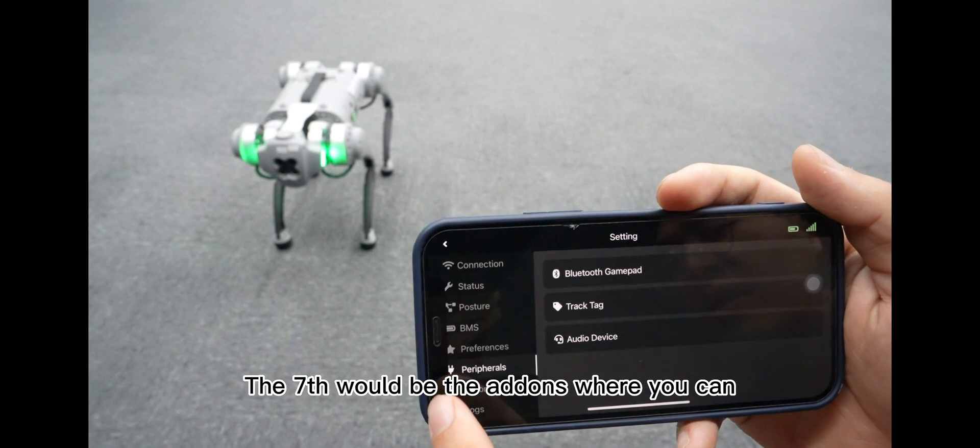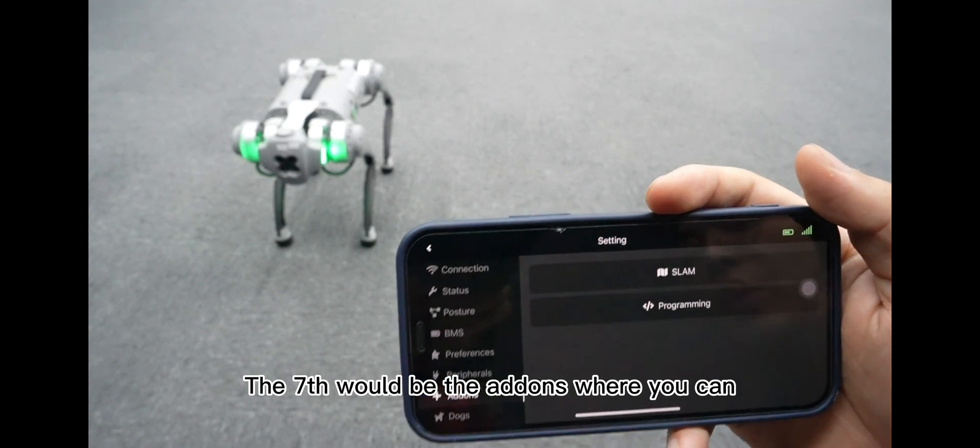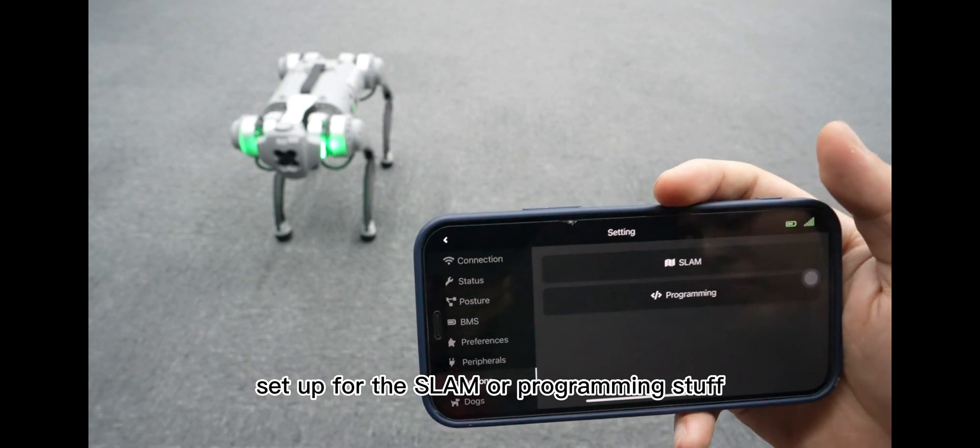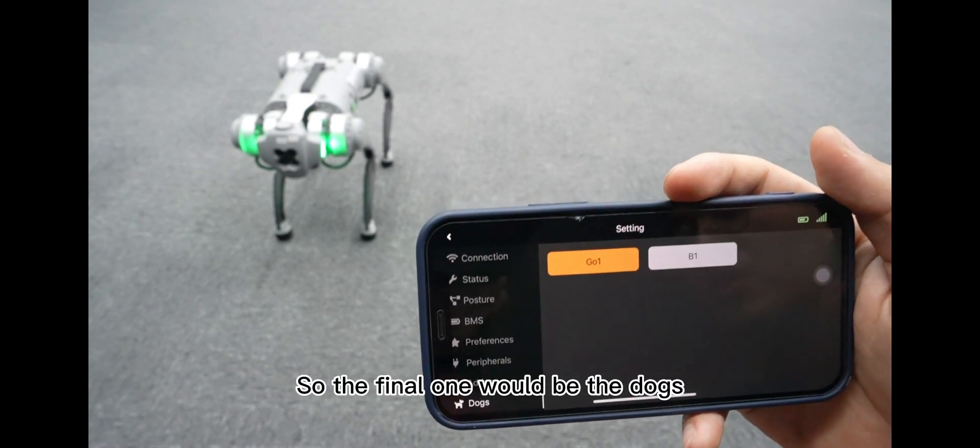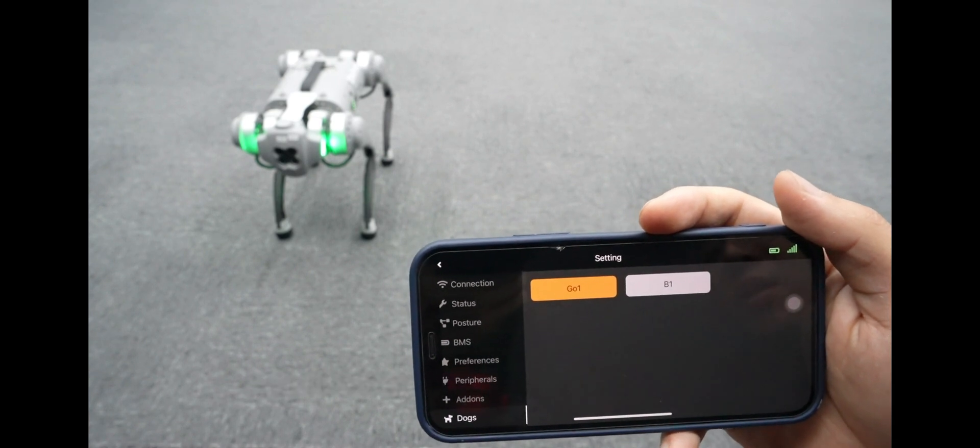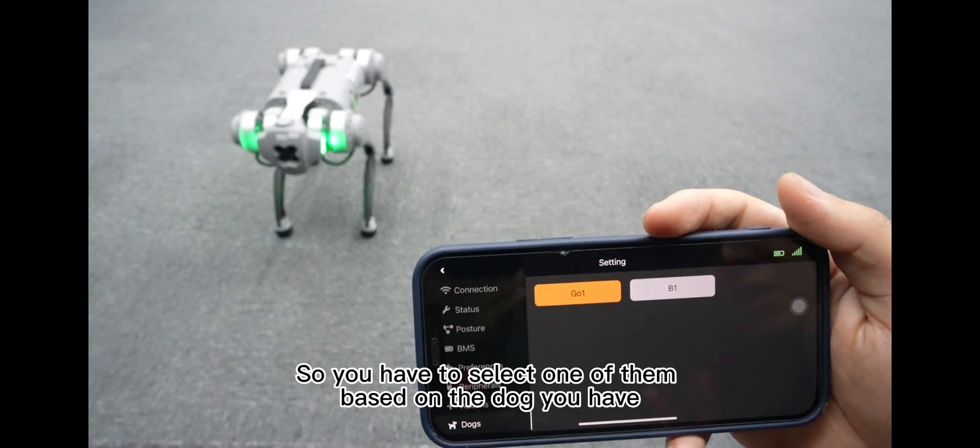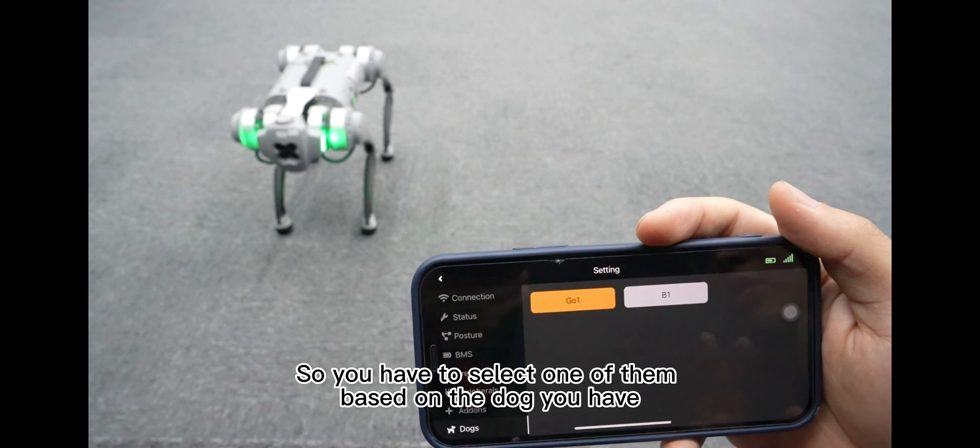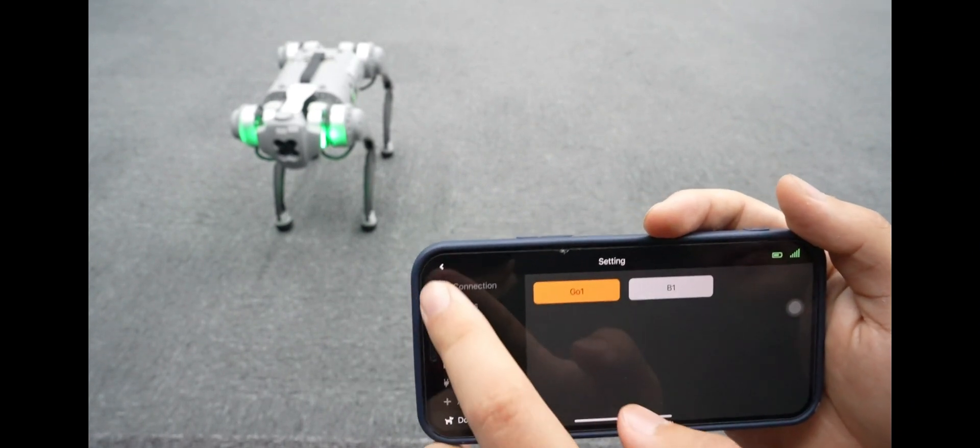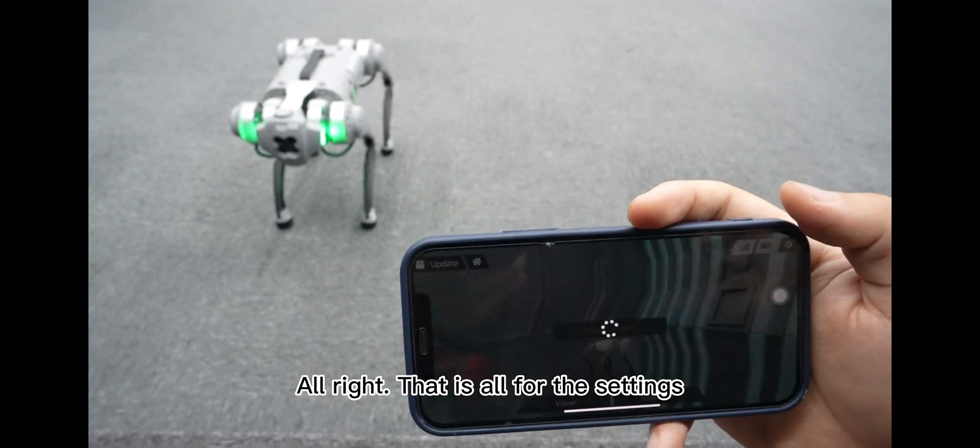So the seventh would be the add-ons where you can set up for the slang or programming stuff. So the final one would be the dogs, because our Go 1 and B1 share the same app. So you have to select one of them based on the dog you have. So for now we have the Go 1 here. That's all for the settings.